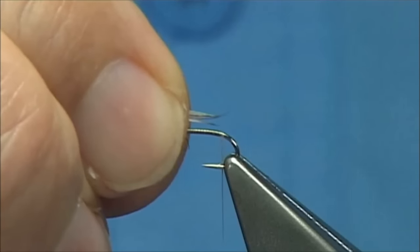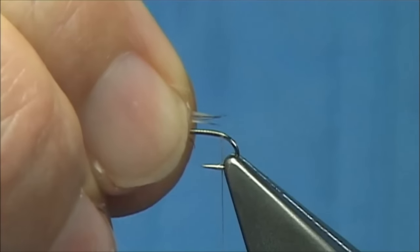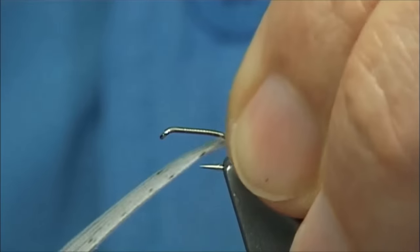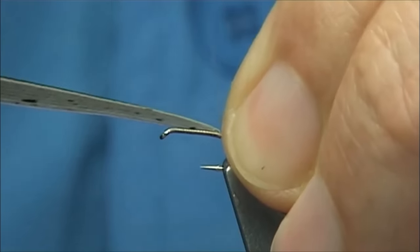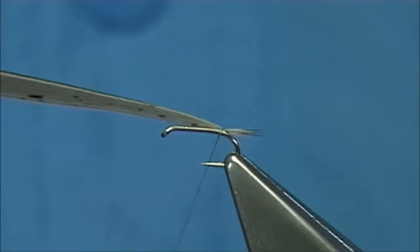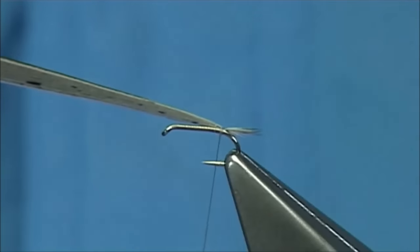Tail, no more than the shank length, just slightly less even, and a couple of turns to hold it. One, two, and just check the tail length. Don't have it too long.